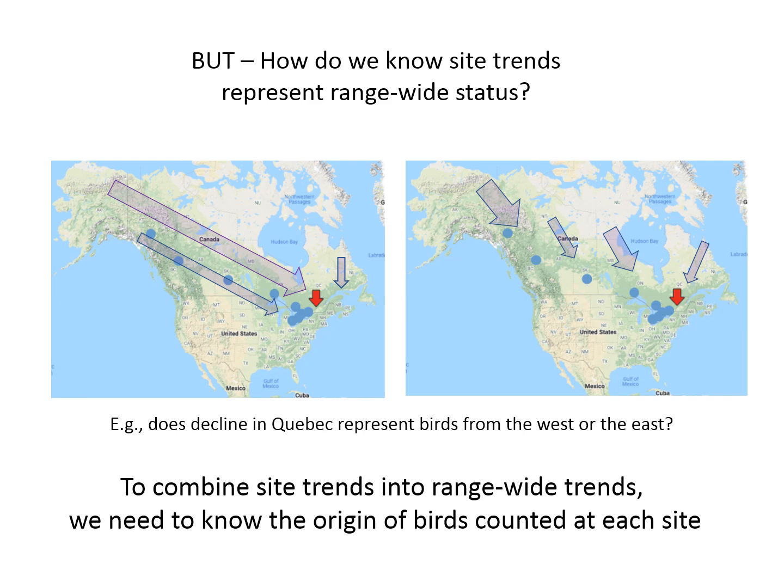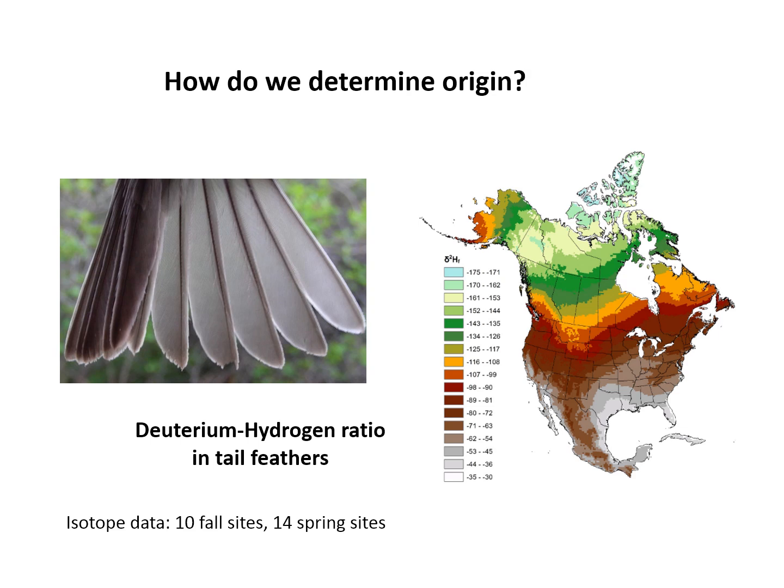That explains why we need to know the migration routes of these birds and what's being captured at each station. The technique we used to define migration routes was to look at stable hydrogen isotope ratios in tail feathers. There is a geographic pattern of the amount of deuterium in rainfall, as shown in the map at the right.